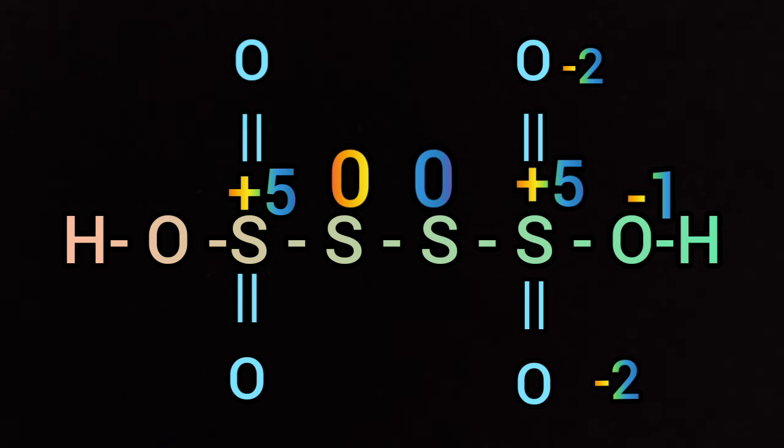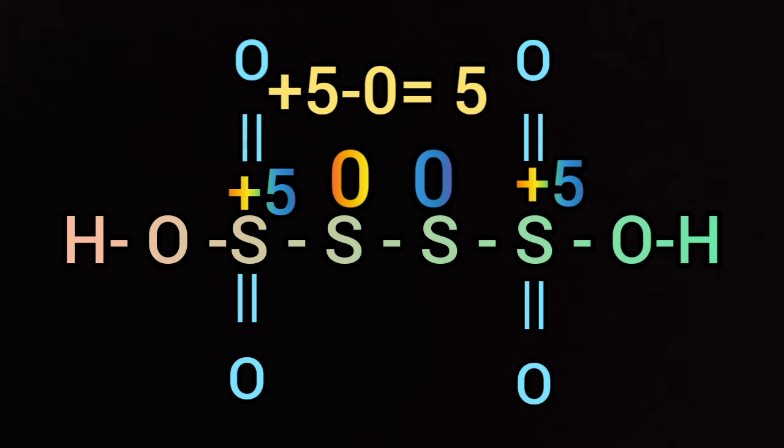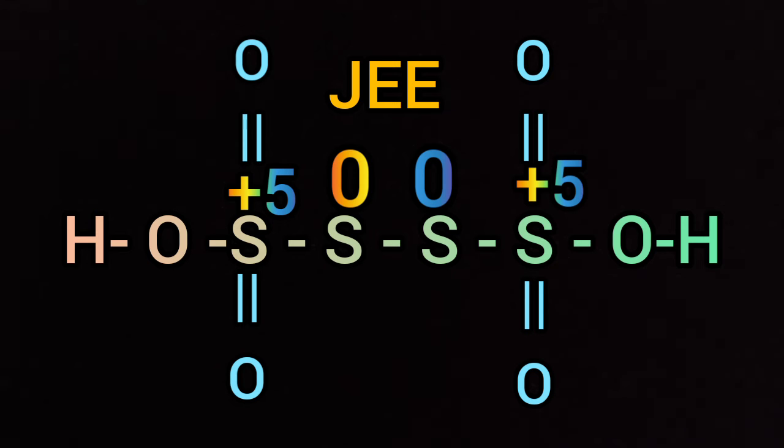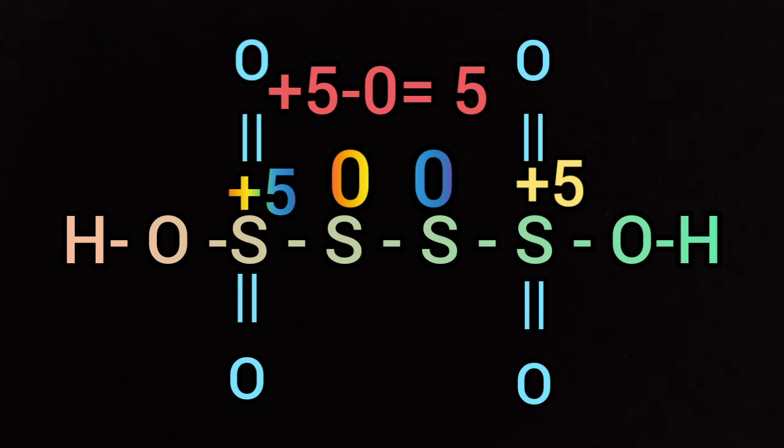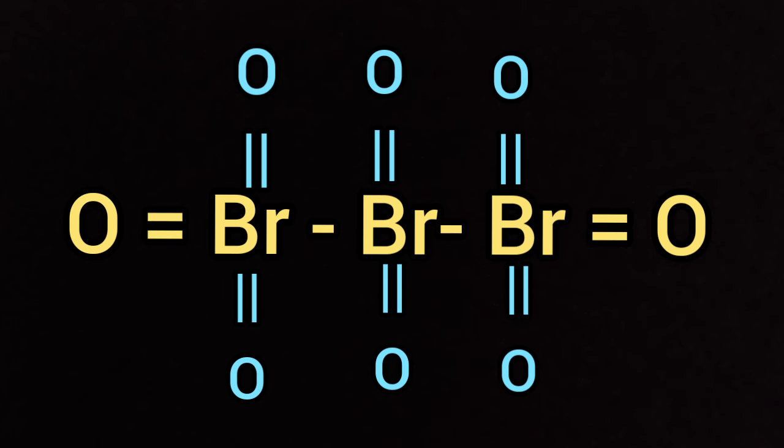It is an integer type question in JEE. Similarly, in case of Br3O8, there are two types of bromine atoms. You see the structure. The difference in the oxidation state of two types of bromine is found to be two.